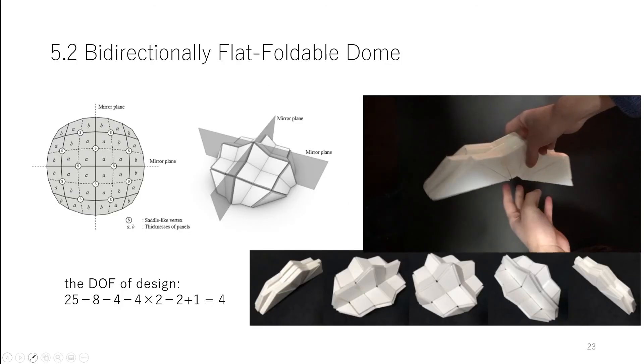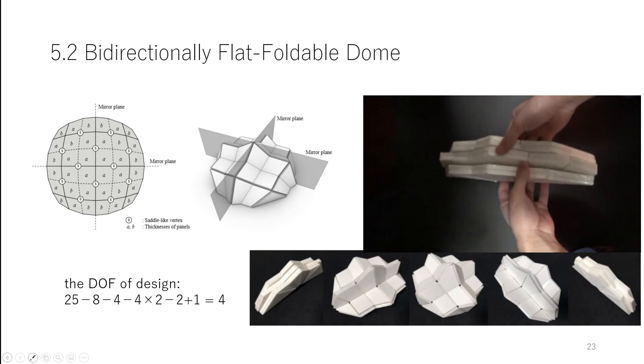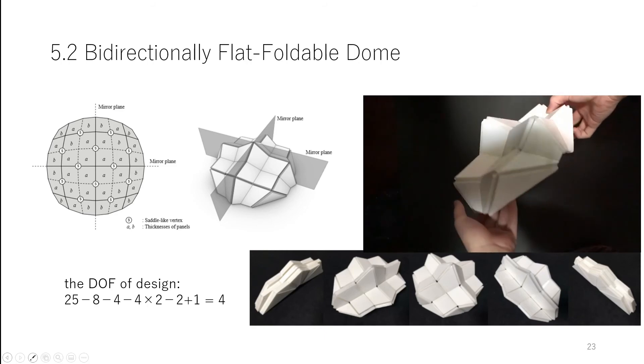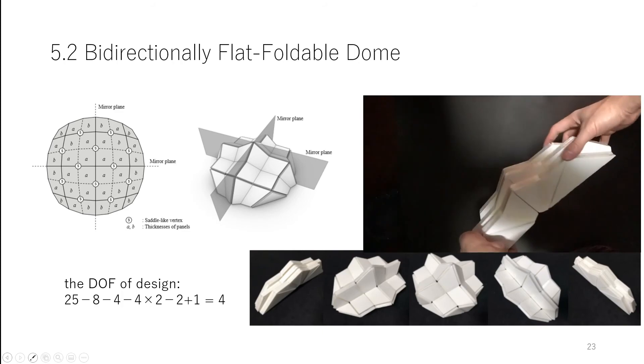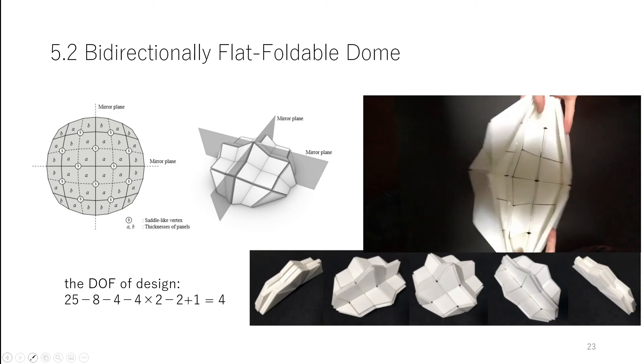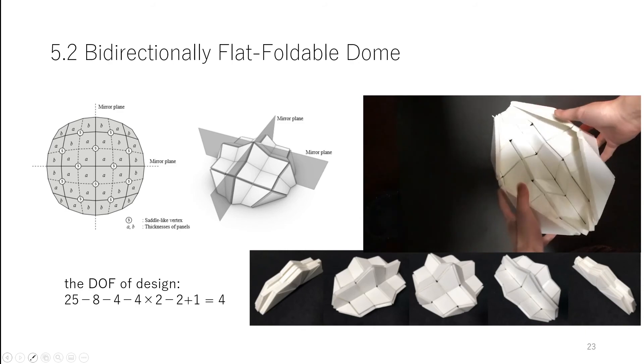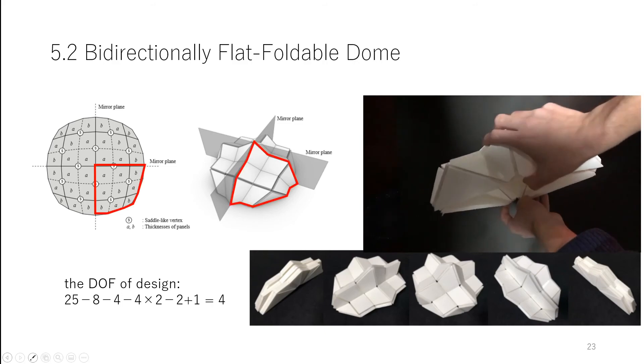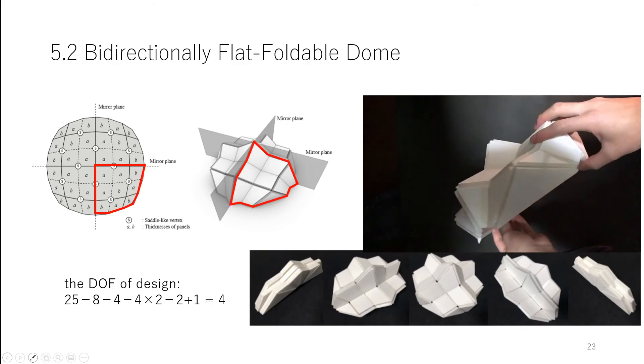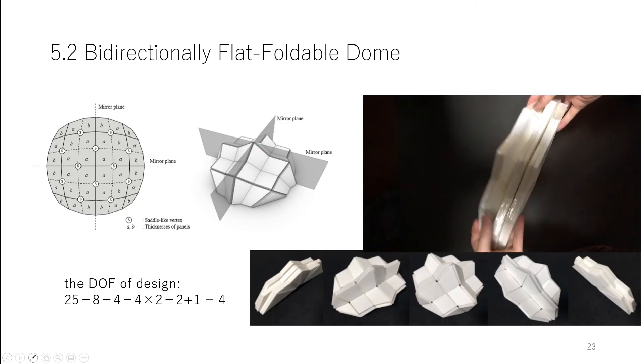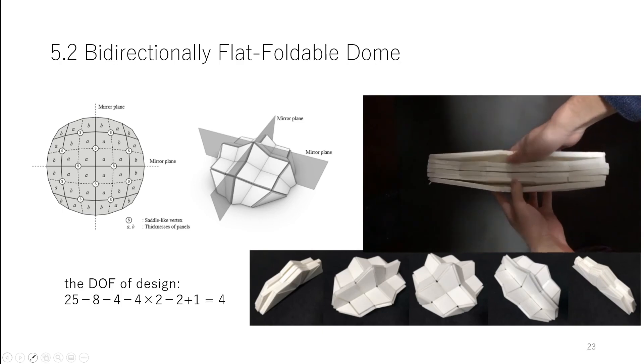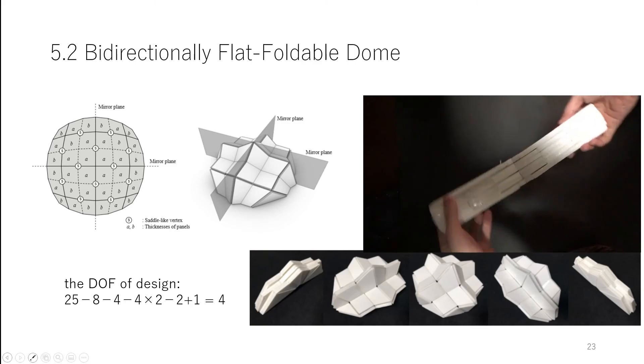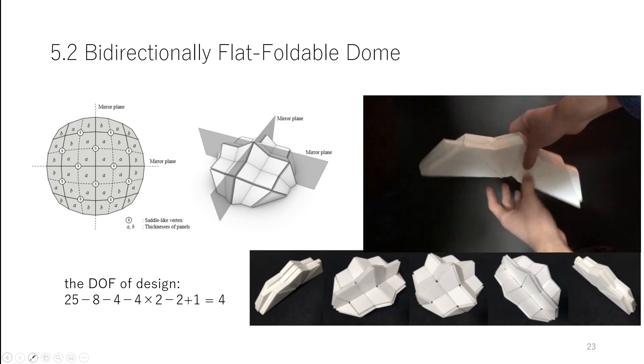For a second example, we demonstrate a design approach using the mirror symmetry about two perpendicular planes. We can construct a bidirectionally flat foldable dome with six-by-six panels. The parameters are computed by solving the constraints for each quadrant composed of three-by-three panels, with constraints that the boundary must lie on the mirror planes. At each vertex on the mirror planes, the opposite and mirrored angles should be equal. Considering the thickness arrangement that can satisfy this condition, two types of thickness can be applied.